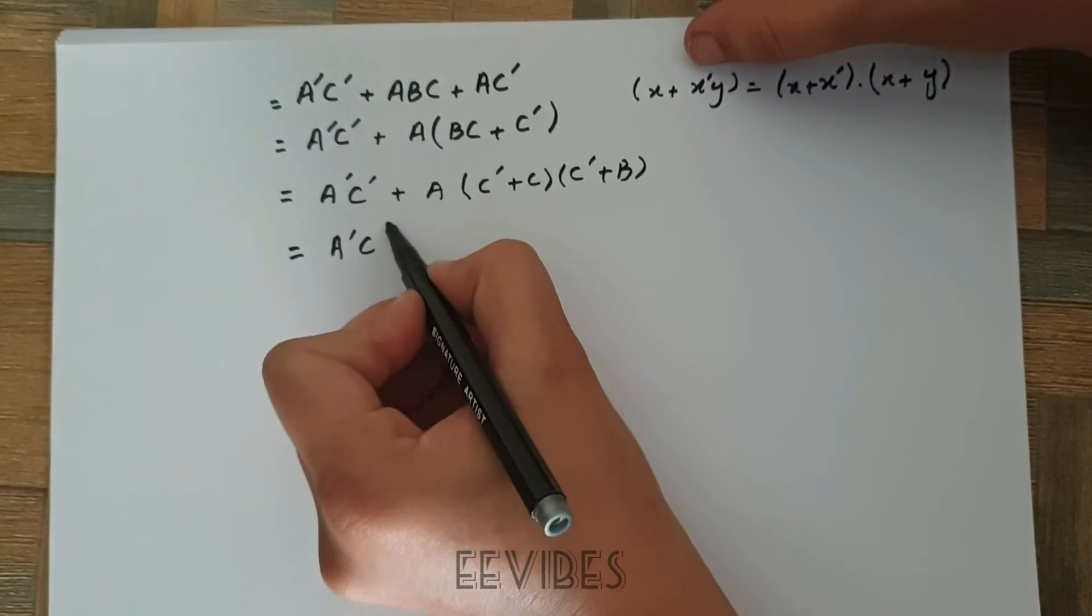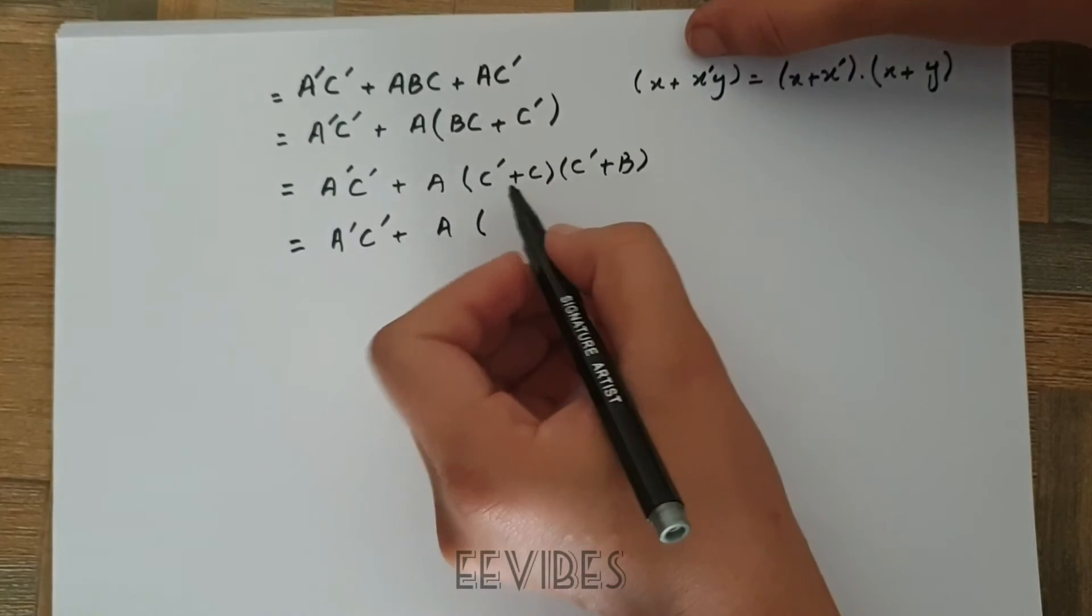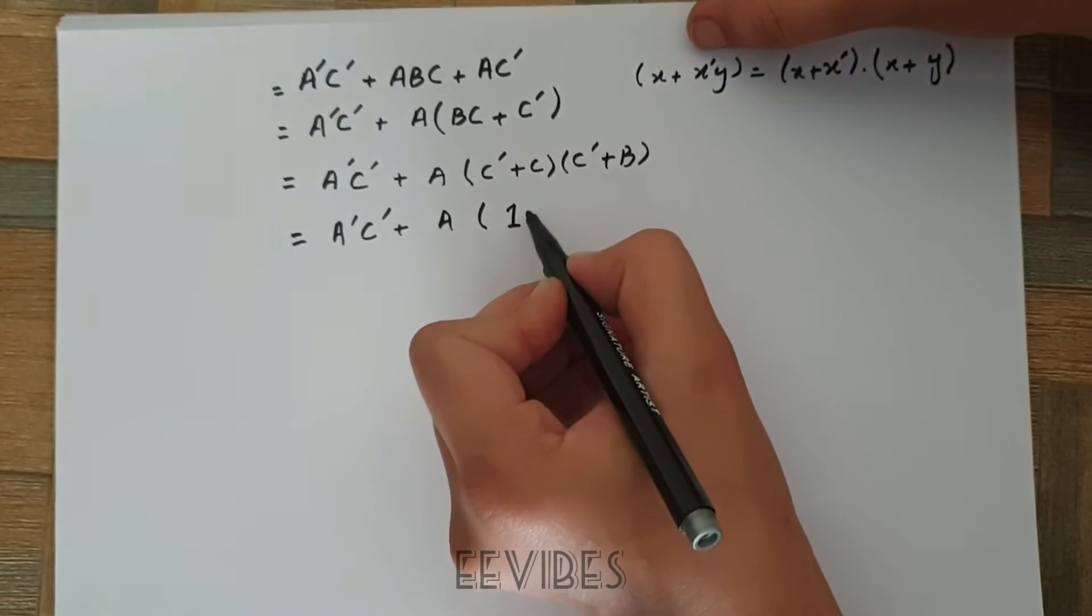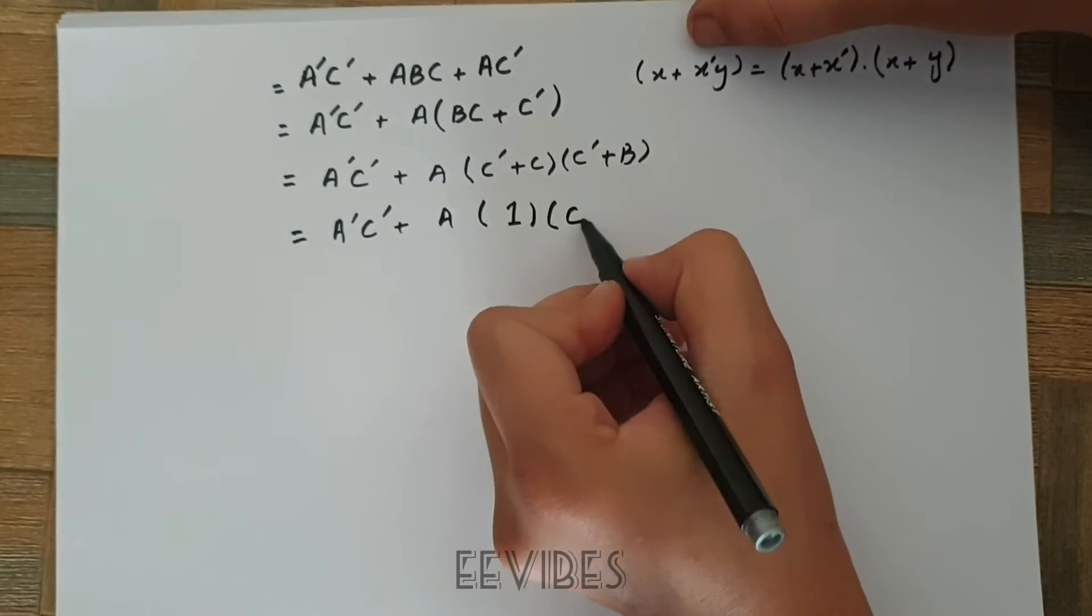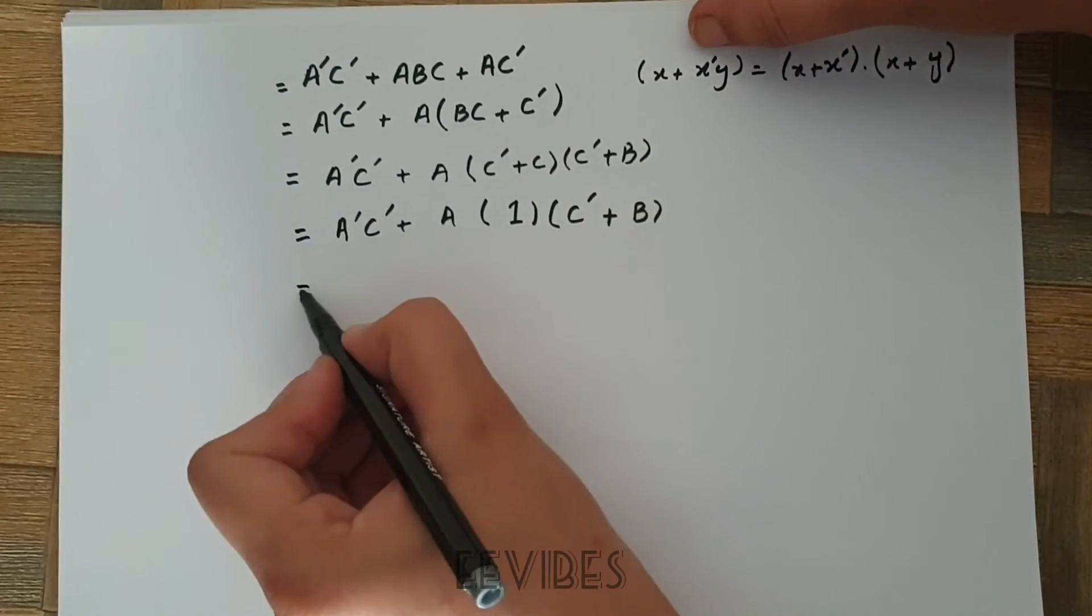The next step is to simplify the above expression using the absorption property. C plus C complement will become equal to 1, and we are left with C complement plus B.